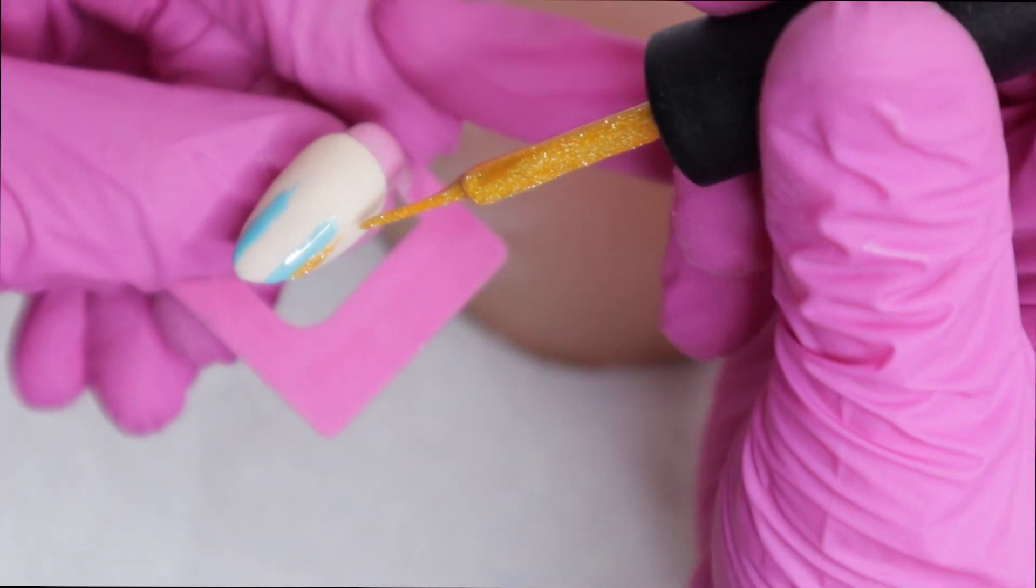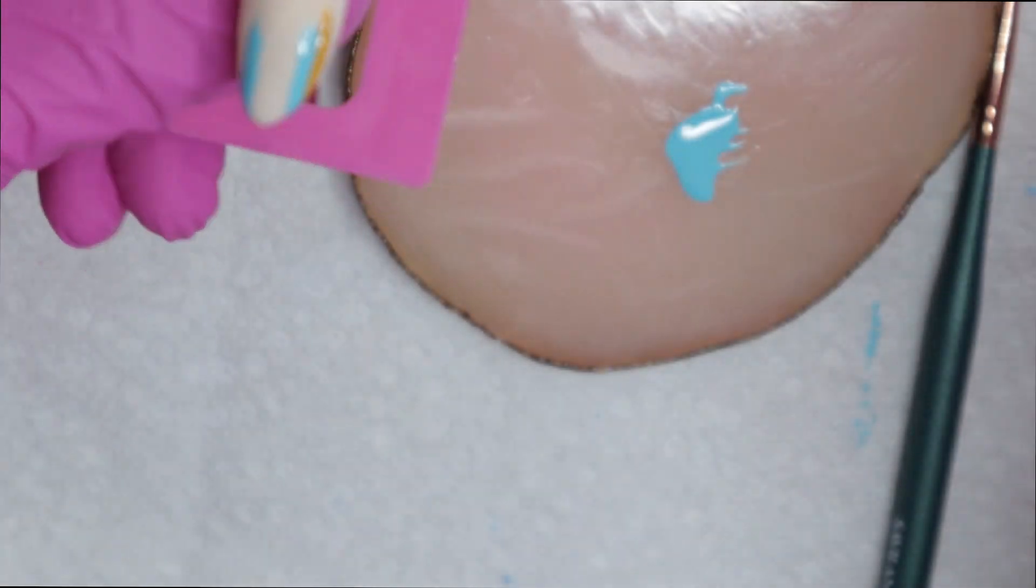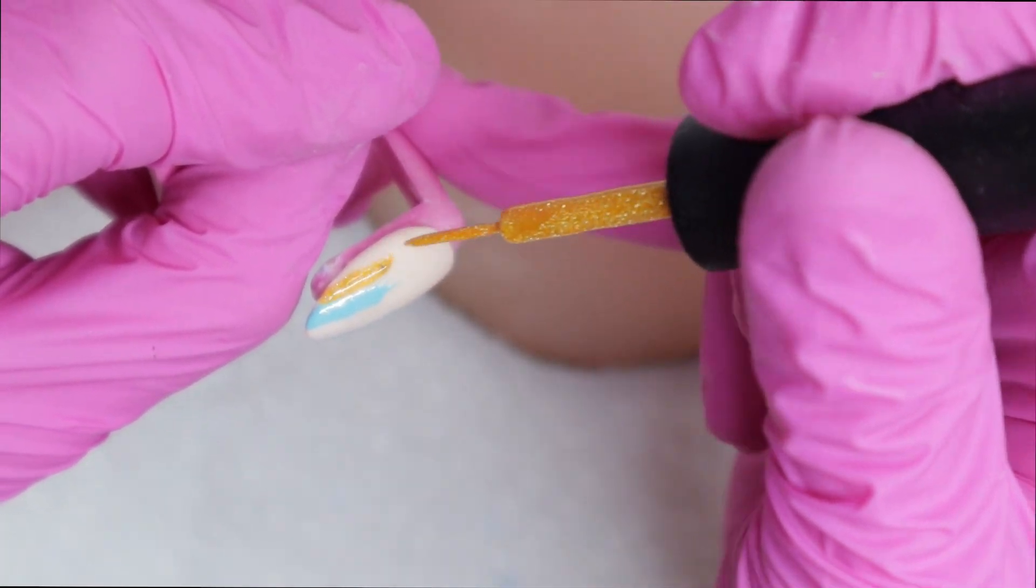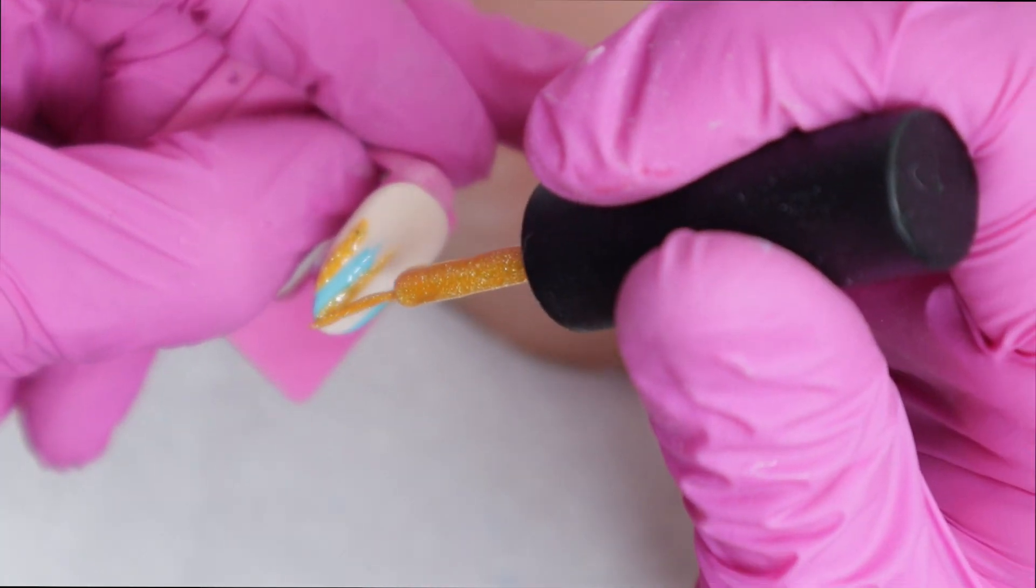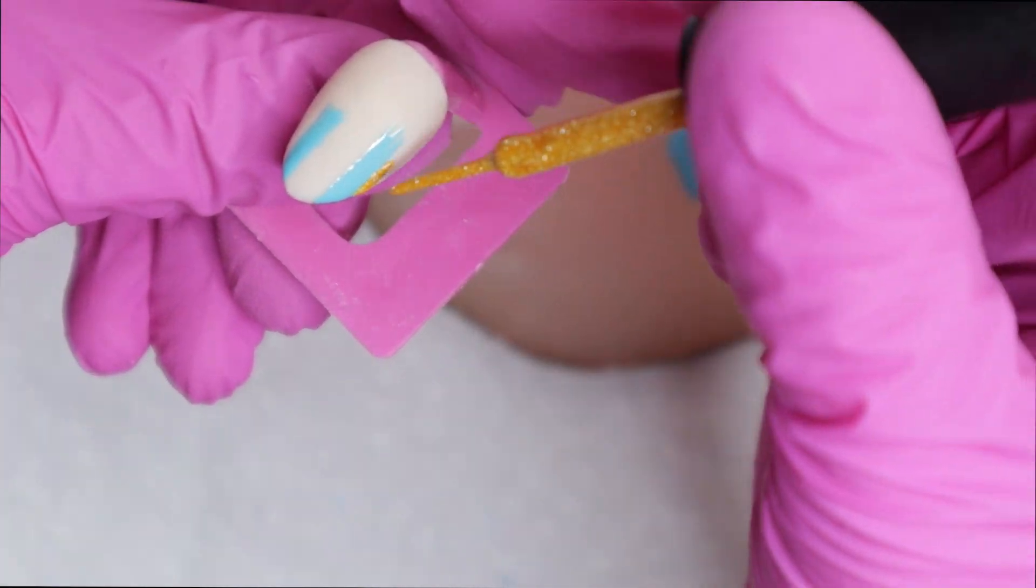Now I'm going to pull out that yellow liner gel. And this is actually a reflective gel. I think the glitter in it really makes all the world of a difference on how this design is turning out so far. So I'm using that reflective gel and I'm putting a little bit here and there, trying to space things out. And I'm going to repeat the same thing on the second nail.